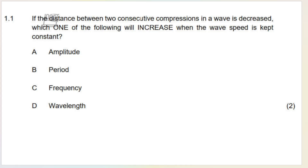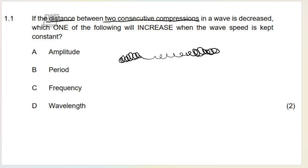So question 1.1: if the distance between two consecutive compressions in a wave is decreased, which one of the following will increase when the wave speed is kept constant? The first thing you need to understand is what is the distance between two consecutive compressions. In a longitudinal wave we have a compression, then a rarefaction. The distance between two consecutive compressions is what we refer to as the wavelength.